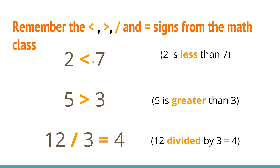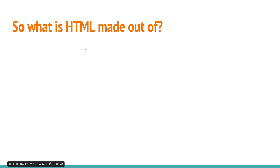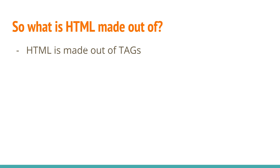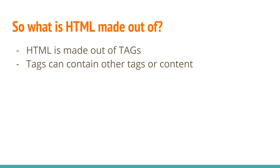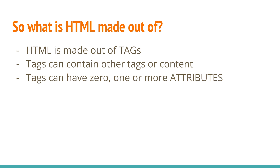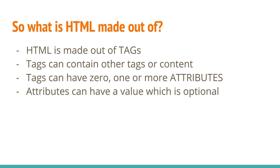All I want you to remember is those signs in orange: the lesser, the greater, the slash or divided sign, and equal. So now let's move into what HTML is made out of. HTML is made out of tags, and tags can contain other tags or content. Tags can have zero, one, or more attributes, and attributes can have a value which is optional. So let's explain each of them.